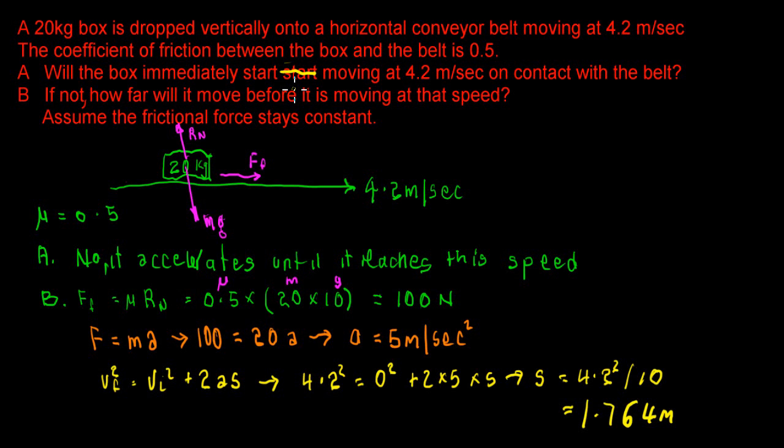So our frictional force is equal to mu Rn. Mu we know is 0.5. And the reaction force in the normal direction or at right angles to the belt is 20, a mass of 20 kilograms times 10 metres per second squared acceleration due to gravity. And that gives us a value of 100 Newtons.